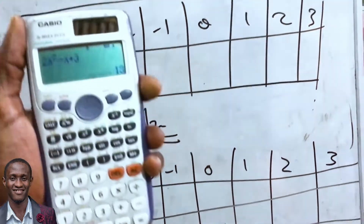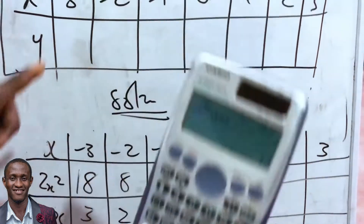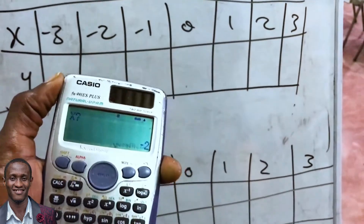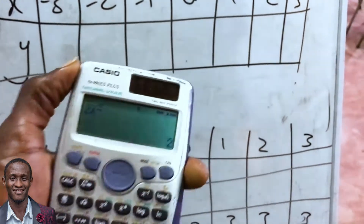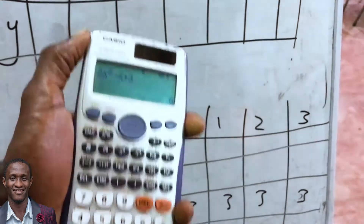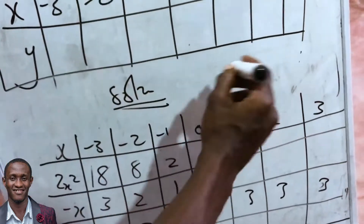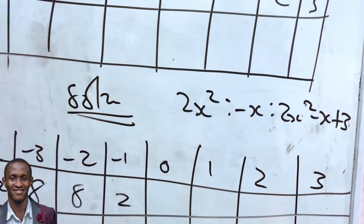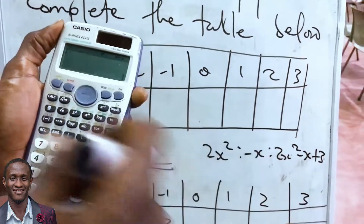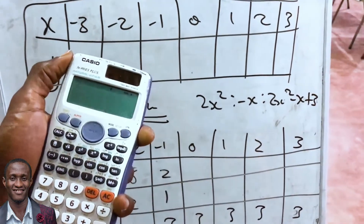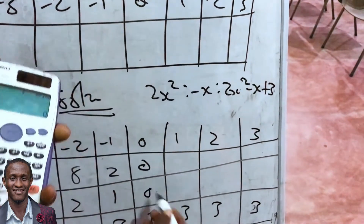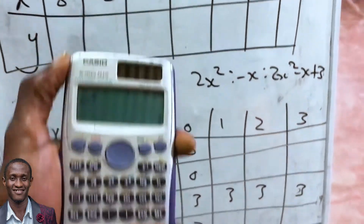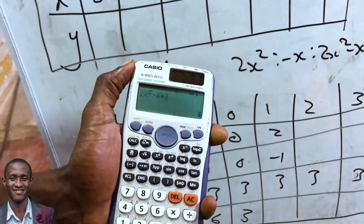You see we are filling one, two, three columns at a goal — instead of typing everything separately each time. For x = -1: the first entry gives 2, second gives 1, third gives 6. For x = 0: first gives 0, second gives 0, third gives 3 — since 0 + 0 + 3 = 3.